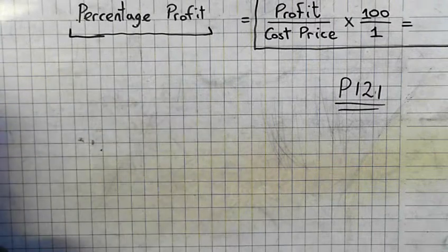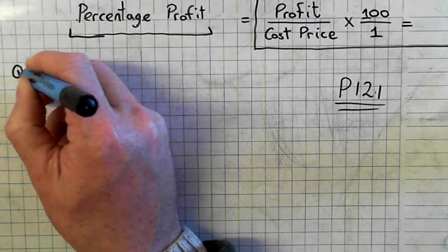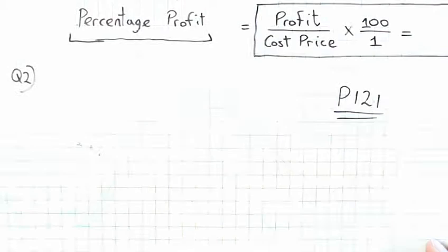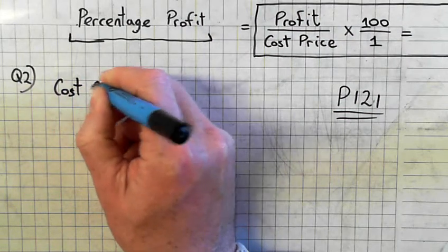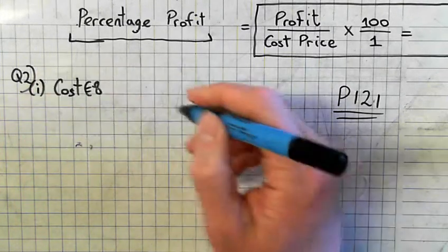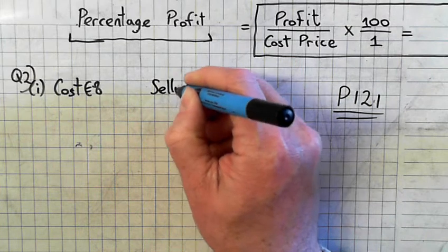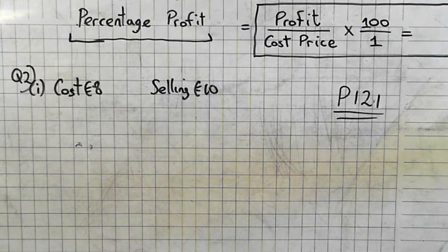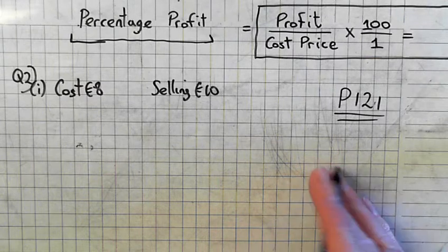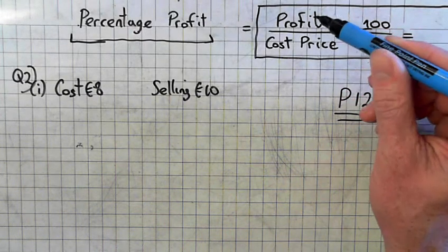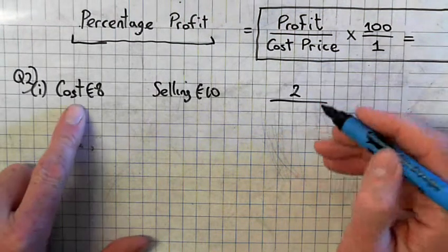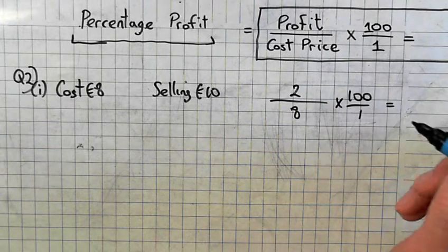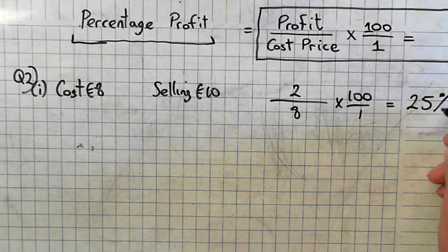Question 2. You have to find out whether it was a profit or loss. Find the percentage profit or loss in each of the following. The cost price is €8, and the selling price was €10. Am I making a profit? Yep. So percentage profit. How do I calculate the percentage profit? The profit, which is €2, over the cost price, 8, multiplied by 100 over 1. 2 over 8 is a quarter, multiplied by 100 over 1. 25%.